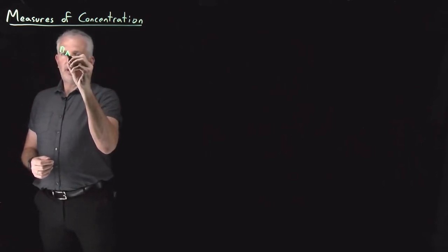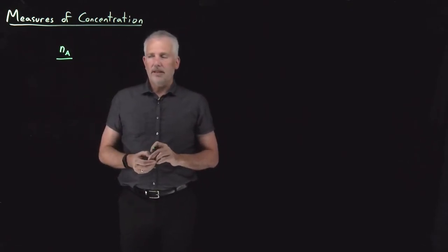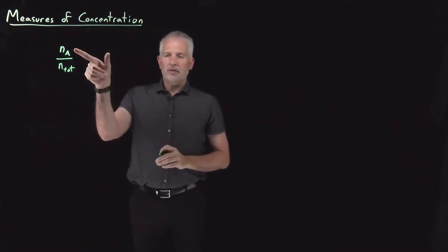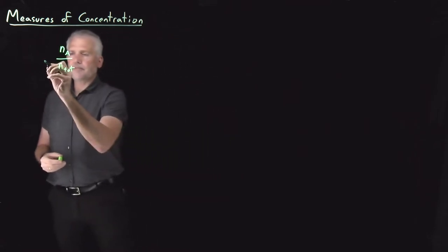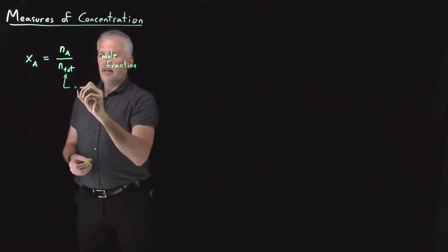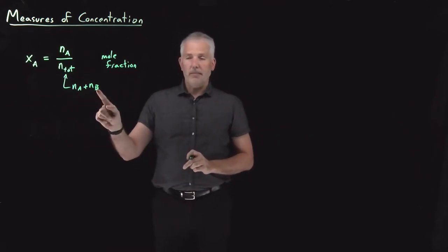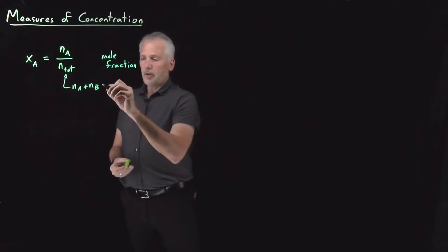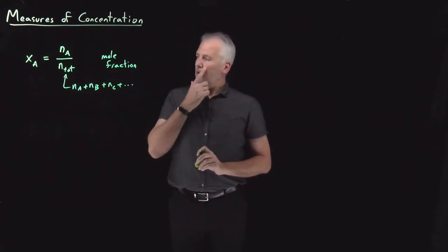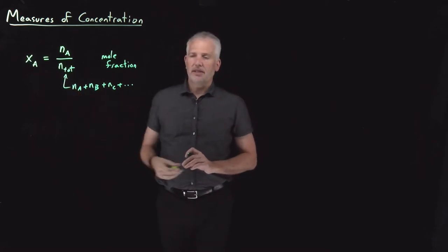If we choose to measure the amount of solute in terms of number of moles — say I dissolve some number of moles of A in some number of moles of B — and I think about concentration as moles of the solute divided by the total moles of the solution, that's the measure we call mole fraction. Total moles is moles of solute plus moles of solvent. Mole fractions are unitless — moles divided by moles — and we use the variable X to denote mole fraction.